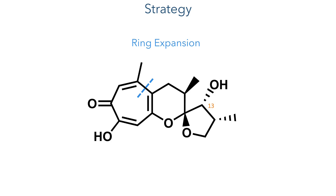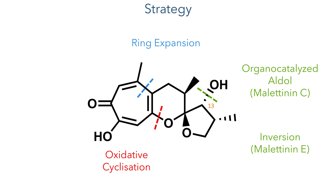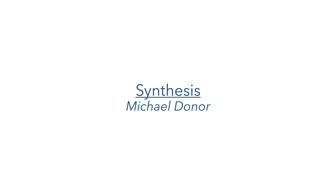The strategy to synthesize these molecules involves a ring expansion to form the tropane ring, an oxidative cyclisation to form the fused pyrone, and an organocatalyzed aldol reaction to set the stereochemistry of carbon-13. To form malatinin E, they would first oxidise the hydroxyl group and then reduce it to invert stereochemistry. So let's dive into the synthesis.